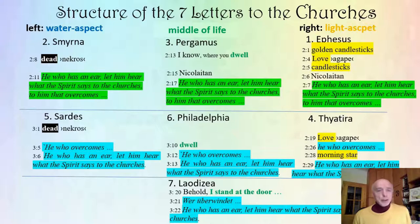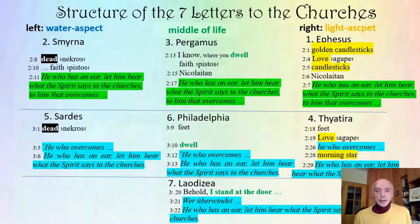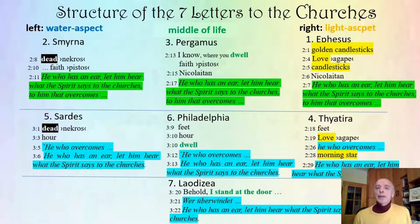Looking at other word connections: Smyrna is linked with Pergamon through the word faith; Thyatira with Philadelphia is linked through the word feet; and Sardis with Philadelphia is linked through the word hour. Remarkably, the combination of feet and hour is found in the properly related vision — the sixth trumpet as well. These are the structural elements I wanted to explain in this presentation.